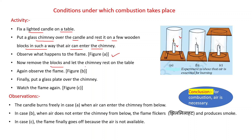Now remove the blocks and let the chimney rest on the table — this is shown in Figure B. And finally, put a glass plate over the chimney — that is Figure C. We observe that the candle burns freely in case A, when air can enter the chimney from below. In case B, when air does not enter from below, the flame flickers and produces smoke. In case C, the flame finally goes off because air is not available. We conclude that for combustion, air is necessary.